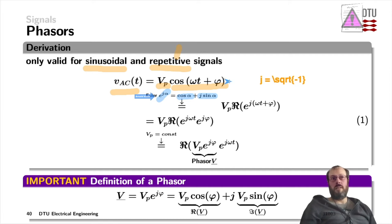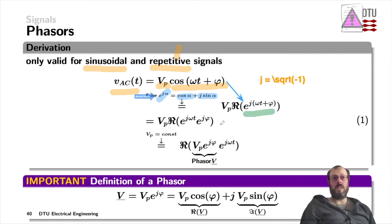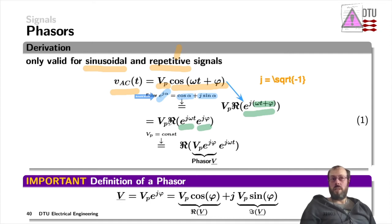That means I can rewrite v as a function of t directly using this Euler form. Using the rules of exponential functions — when the exponent is a sum of two arguments, we can multiply the two exponentials — I split e to the j(omega·t + phi) into e^(j·omega·t) times e^(j·phi). The real part and the v-peak factor remain in front of the bracket.